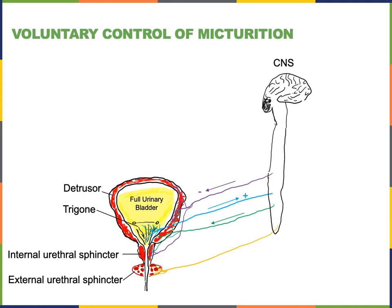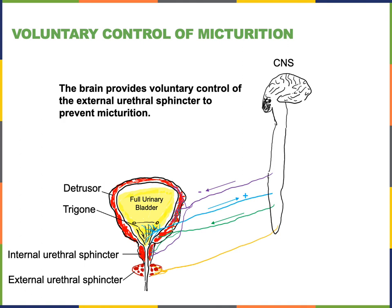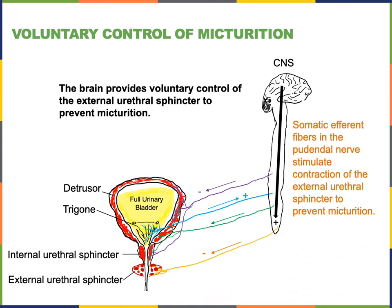However, as we mature, we develop voluntary control of micturition. The brain provides this voluntary control by sending descending commands to stimulate lower motor neurons in the spinal cord, which activate somatic efferent fibers of the pudendal nerve to stimulate contraction of the external urethral sphincter, preventing micturition. Therefore, we can activate this pathway voluntarily to hold our bladder and prevent micturition until we get an opportunity to go to the bathroom.